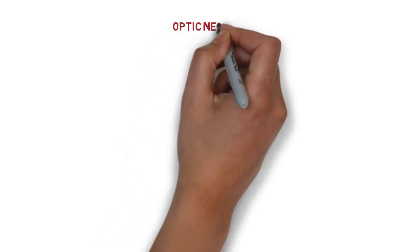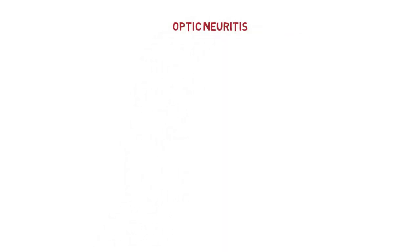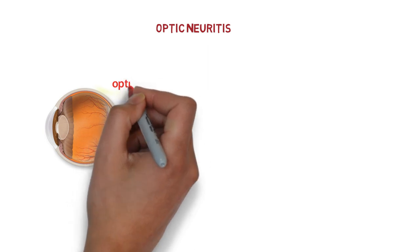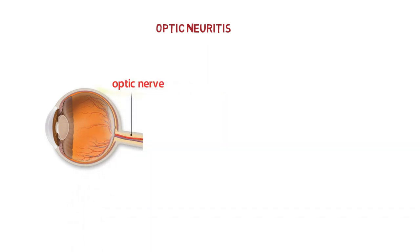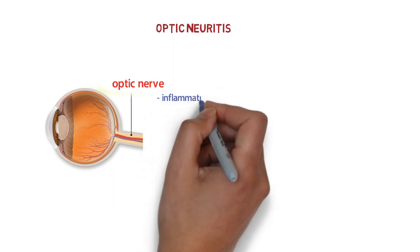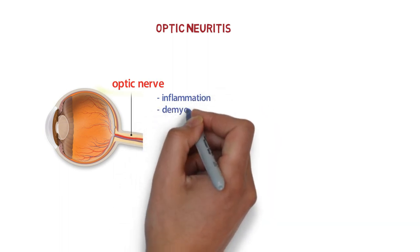Hey friends, we are going to discuss optic neuritis. What is optic neuritis? It refers to inflammation. Look over this diagram - this is the optic nerve, and in optic neuritis there is inflammation and demyelination of the optic nerve.